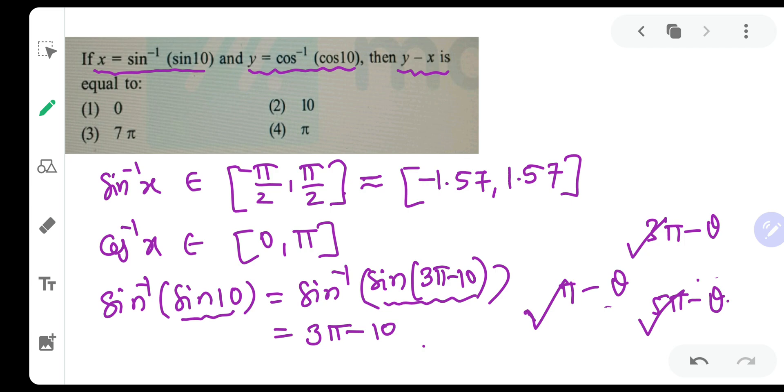Just try this for many questions. You will understand that on your own. You have to try pi minus theta, 3 pi minus theta and 5 pi minus theta. Here we have tried 3 pi minus theta and that came out to be in the range.